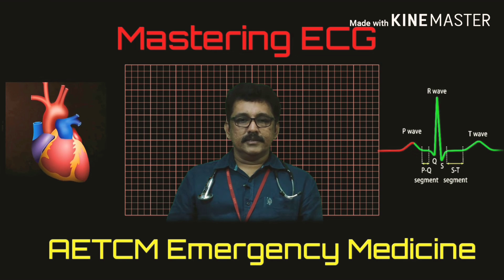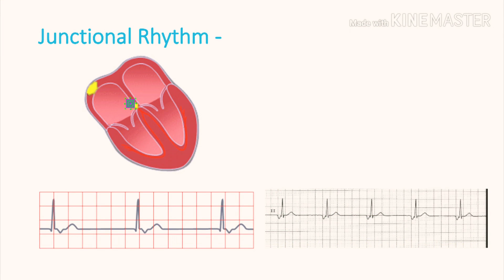In this ECG, there are no proper P-waves — P-waves are inverted or can even come after the QRS complex. This is because electrical activity originates from the junction and travels back through the normal conduction pathway. The current starts from the junction, stimulates the ventricle first, then stimulates the atrium — that is why you get an inverted P-wave or a P-wave after the QRS complex. This is called junctional rhythm.